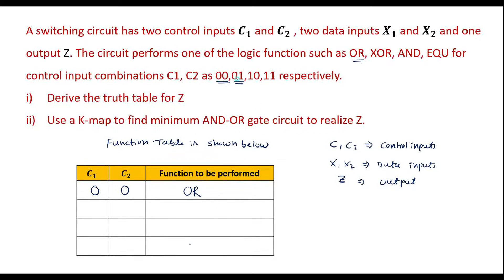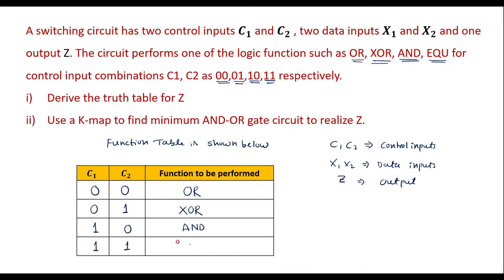Similarly, when C1 is 0 and C2 is 1, it should perform the XOR operation. When C1 is 1 and C2 is 0, it should perform the logical AND operation. And when both C1 and C2 are 1, it should perform the XNOR (equal) operation.